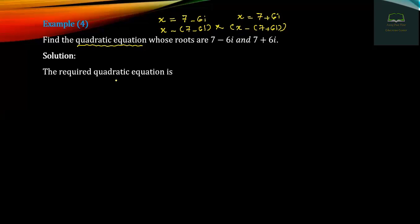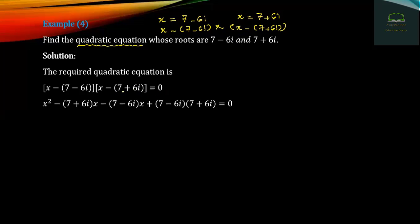The quadratic equation is H minus 7 minus Ci into H minus 7 plus Ci equal to 0. The distribution of the quadratic equation is H minus A squared. Then we have H minus 7 plus Ci into H, then A minus Ci. Then we have H minus 7 plus Ci. Then we have H minus Ci.